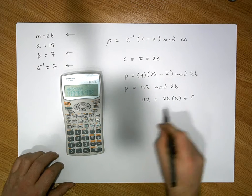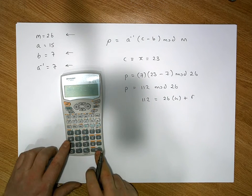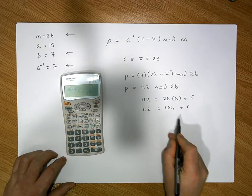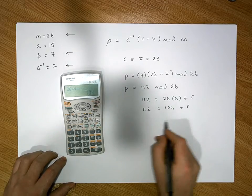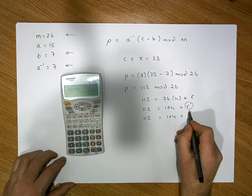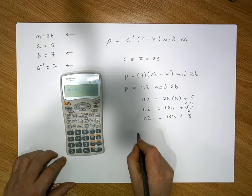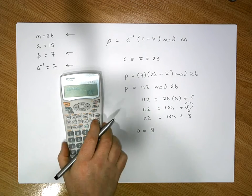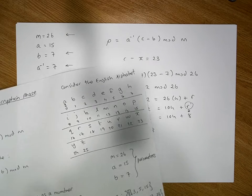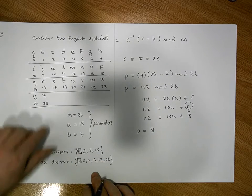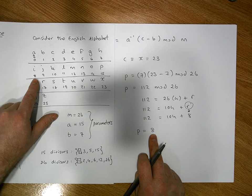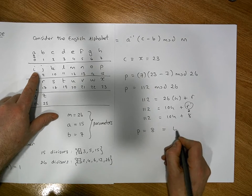26 times 4 gives us 104, so we have 112 equals 104 plus a remainder. The remainder must be equal to 8 — 112 is 104 plus 8. So our plain text p must be equal to 8. When we look 8 up on our encoding table, the character represented by the number 8 is the character I.